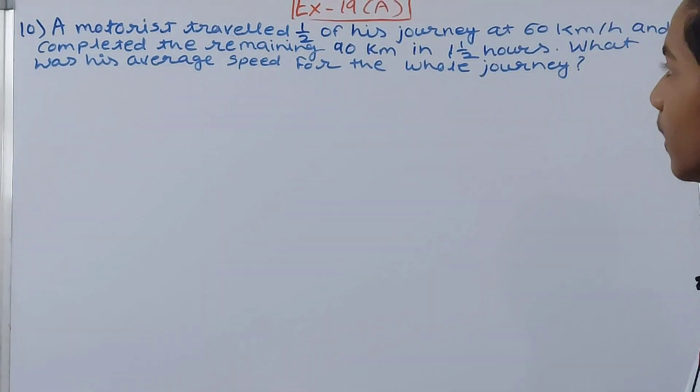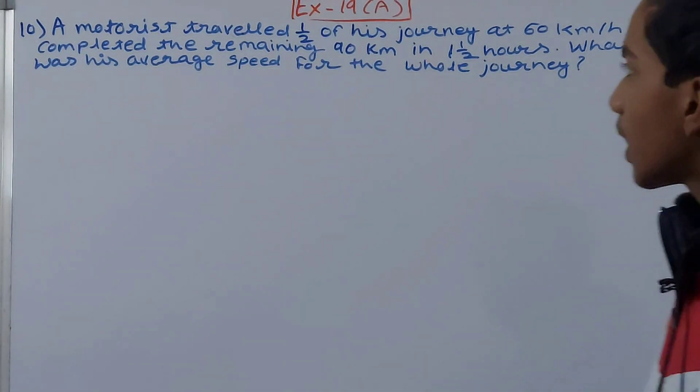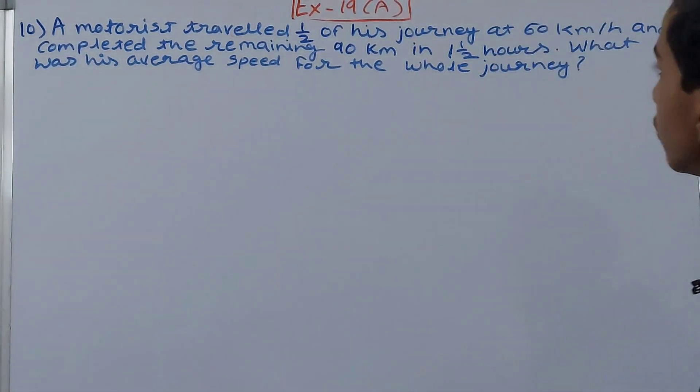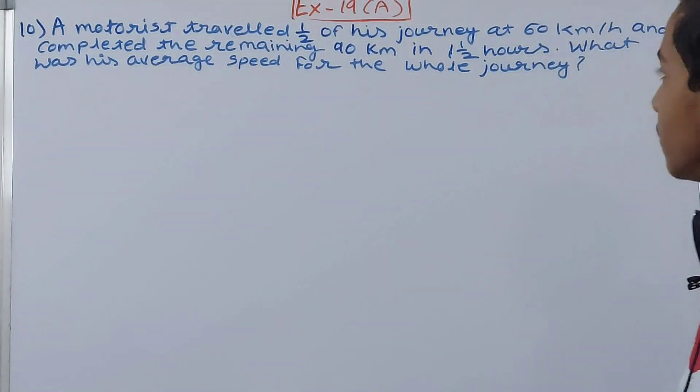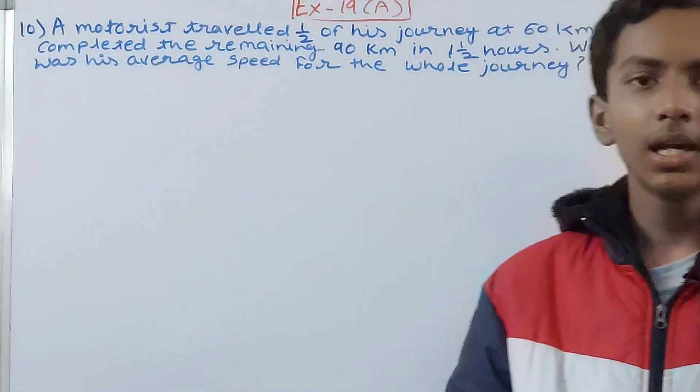The problem says: A motorist traveled one-half of his journey at 60 kilometers per hour and completed the remaining 90 kilometers in one and a half hours. What was his average speed for the whole journey?